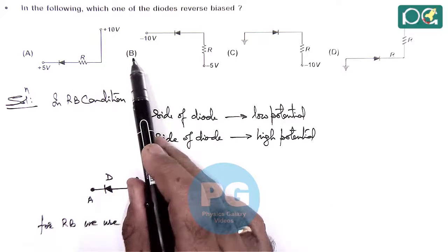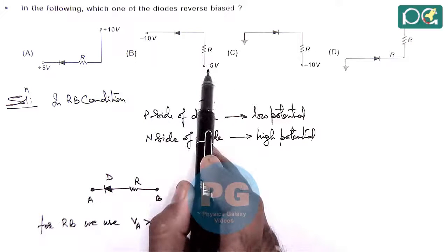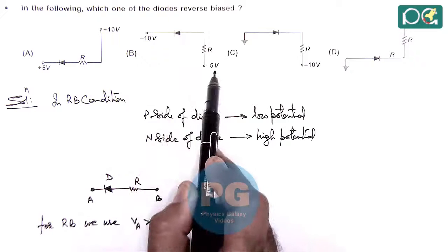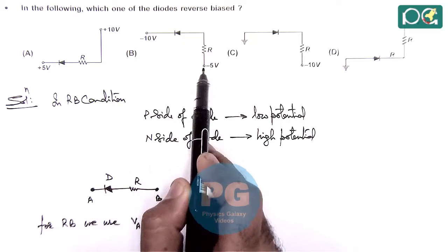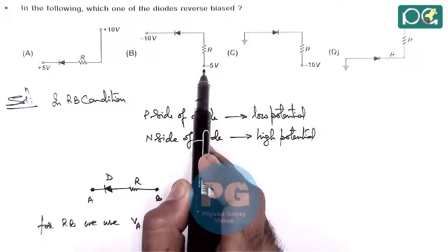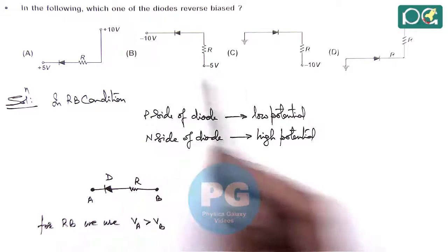In option B, the P side is at minus 5 volts and the N side is at minus 10 volts. So here also, the P side is at higher potential. This is also forward bias.